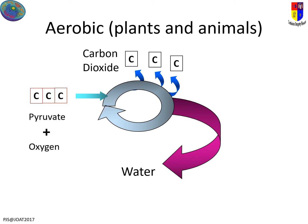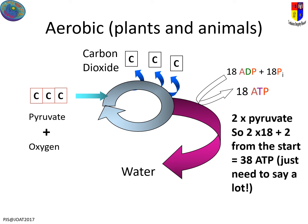This is actually where you get the most energy. We got two ATP from the top in glycolysis, and now you get a whole massive pile more. You actually go around the cycle twice because you've got two pyruvates, and you actually manage to get 38 ATPs in total. You don't need to give that exact number — you just need to say it's a lot.